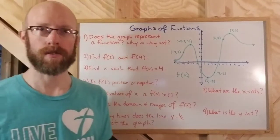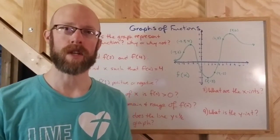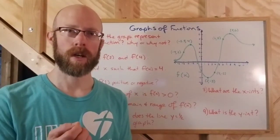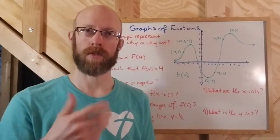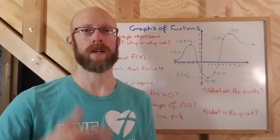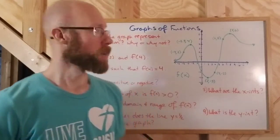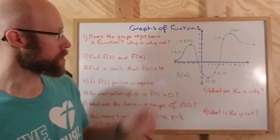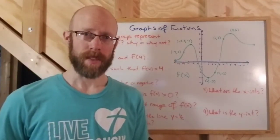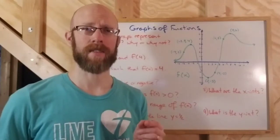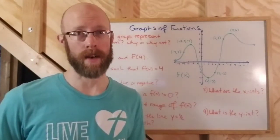The definition of a function is a relation in which every input corresponds to exactly one output — every x value has exactly one y value. If I look at this graph to determine that, I cannot have an x value correspond to more than one y value.